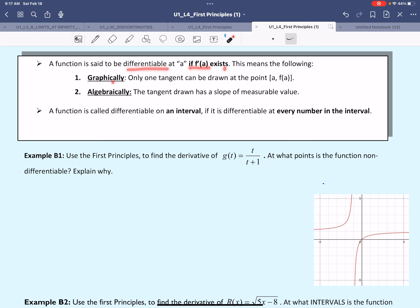Graphically speaking, it means that only one tangent can be drawn at that point. Algebraically speaking, it means that the tangent drawn has a slope of measurable value. A function is called differentiable on an interval if it is differentiable at every single point in that interval.